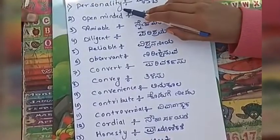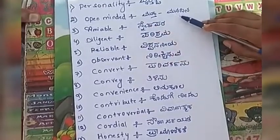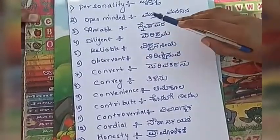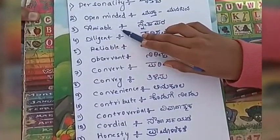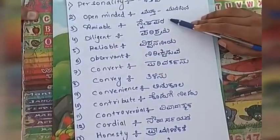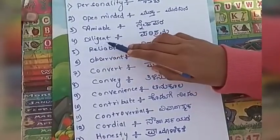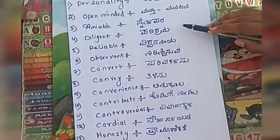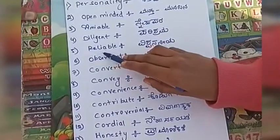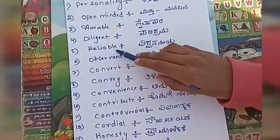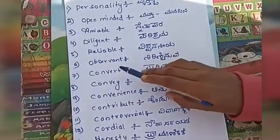First: personality, open-minded, amiable, diligent, reliable, observant.